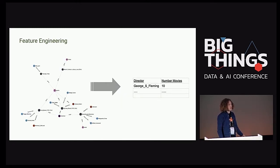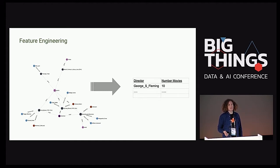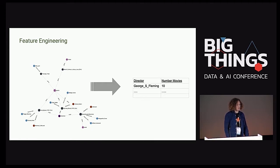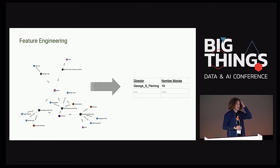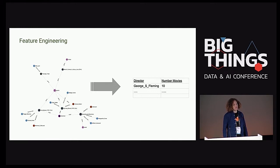For example, if we take a graph and want to predict which director to choose for a blockbuster movie, we extract features like the number of movies made by each director — information easily understood by humans but not yet so well by machines. This graph-to-feature extraction is a typical step in feature engineering, and there's active research in this area.